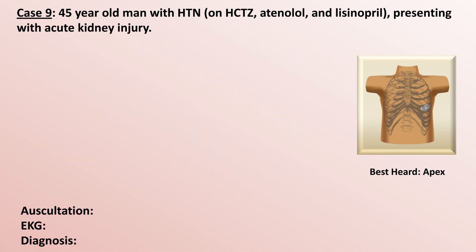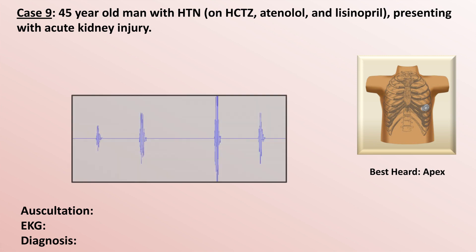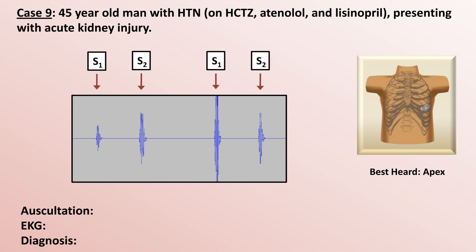This is a relatively obscure auscultation example that has been altered to bring out the abnormality, which was previously very subtle. Here is the phonocardiogram showing two successive cardiac cycles with S1 and S2 labeled. You can see that the amplitude or intensity of S1 varies quite a bit from one beat to the next.